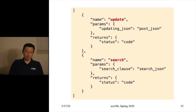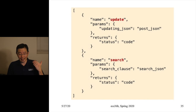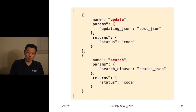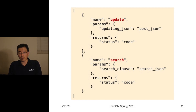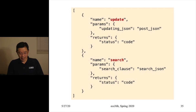To summarize: we have two RPC functions — `update` and `search` — along with three supporting functions: `dumpj`, `json_to_post`, and `merge_posts`. Together, these five pieces allow you to do a lot of interesting things.